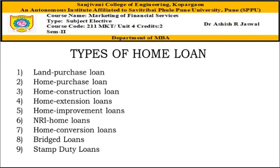For a home construction loan, the plot or land should have been bought within a year. The borrower has to make a rough estimate of the cost that will be incurred for the construction of the house. If the cost of the plot is not included in the loan amount, only the estimation for the construction of the house is taken into consideration.